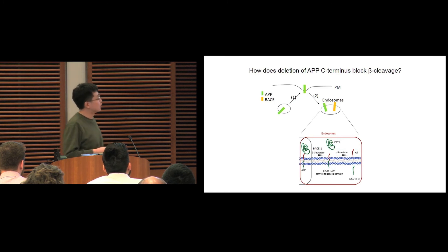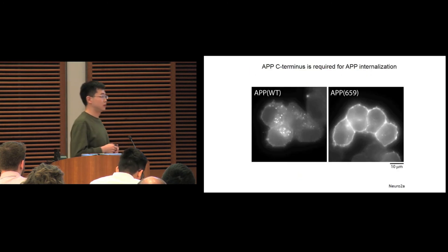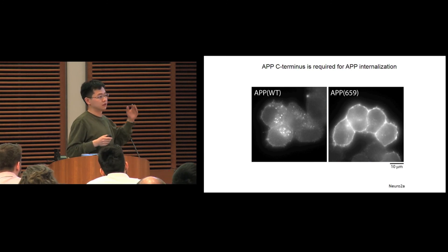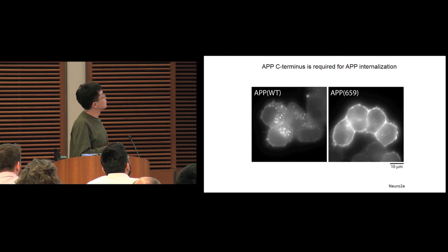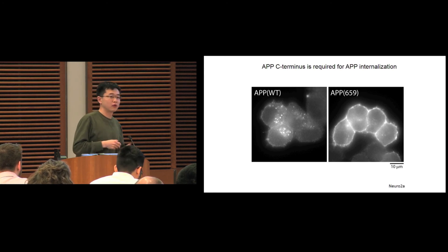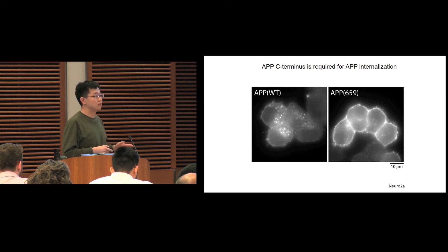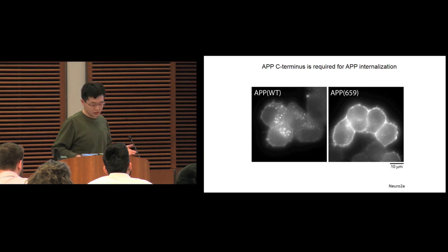Here, we trace the cell surface APP and look at where APP goes after surface labeling. With wild-type APP, you can see APP can be actively internalized into the endosome, shown by this vesicle structure. However, if we express APP C-terminal deletion, which mimics the APP CRISPR product, you can see the protein is retained along the plasma membrane, suggesting the internalization process is blocked.